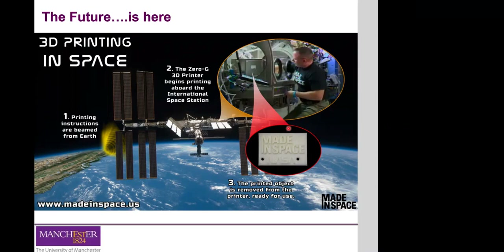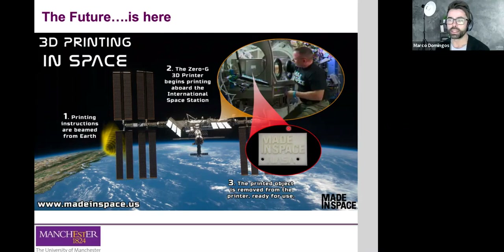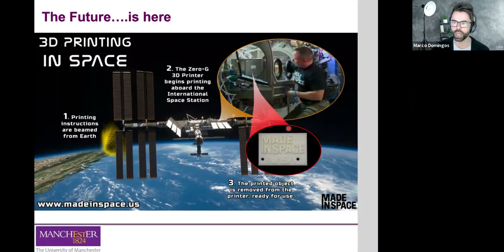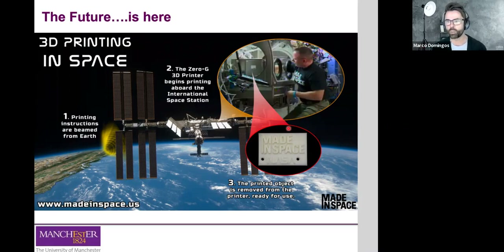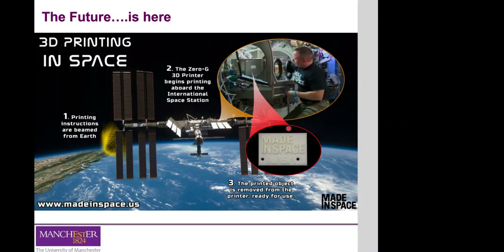Student question: Is powder bed fusion the only method to 3D print 100% metal? Yes — for example, binder jetting inks can have a high percentage of metals, but the final part is not 100% metal. The only system that can print 100% metal parts is powder bed fusion. Another student asked about additive manufacturing having inferior surface finish quality and the process of polishing and post-finishing.